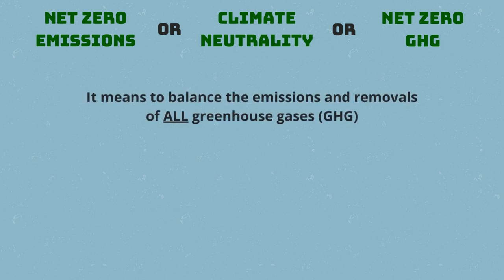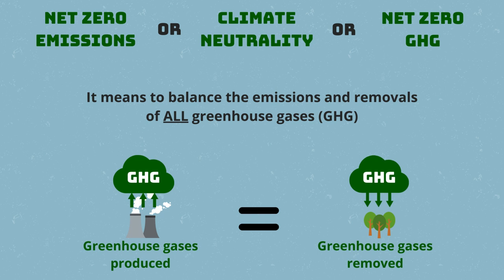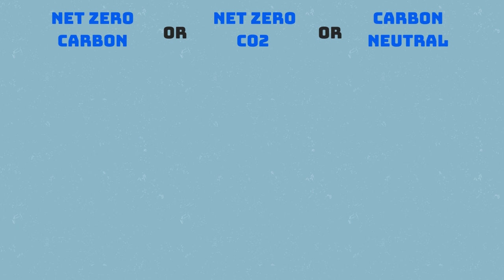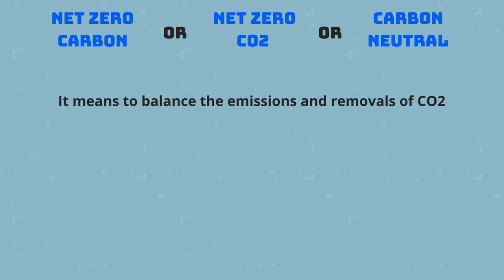We have climate neutrality when there is a balance between the greenhouse gases produced and removed from the atmosphere. This is achieved when the produced emissions of all GHGs are offset by climate protection measures which aim to reduce the amount of greenhouse gases. On the other hand, net zero carbon, net zero CO2, or carbon neutral all refer to the balance between the CO2 emitted and removed.